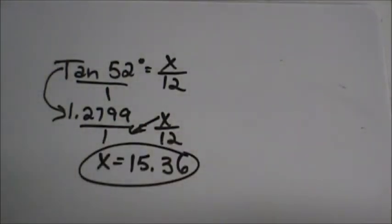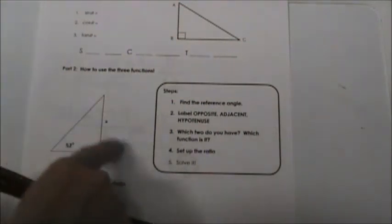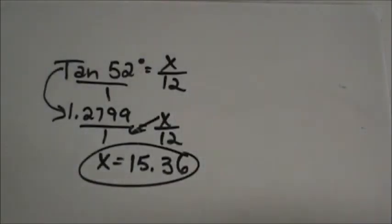In the original problem, we were solving for the other leg, so that means this leg would be 15.36, which sounds approximately right. Because if one leg is 12, the other leg would be a little bit longer since it's 52 degrees — that's a larger angle. So that's how you would work the trig function.